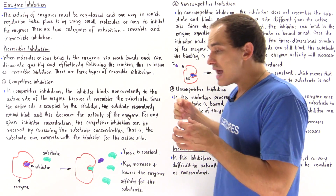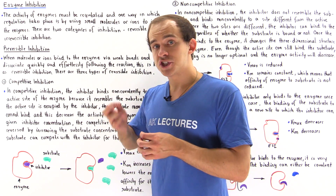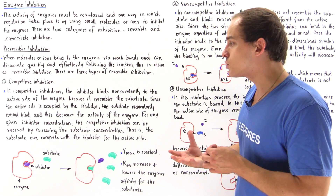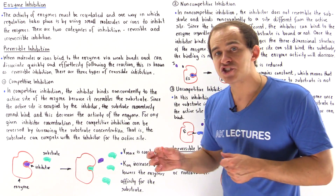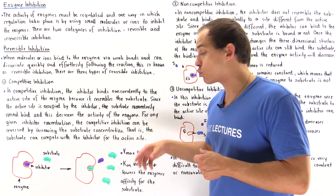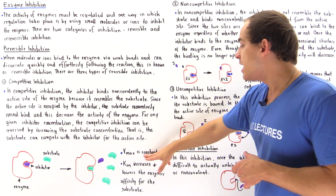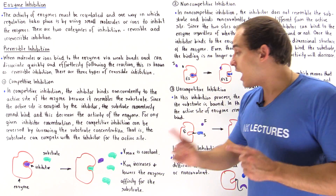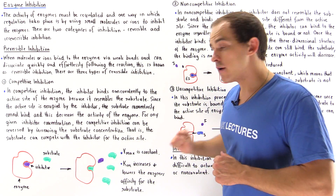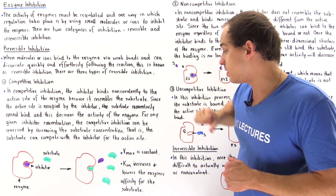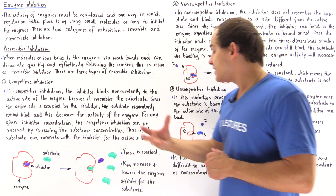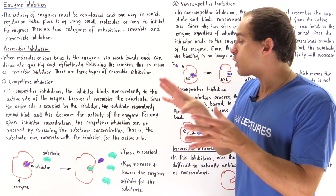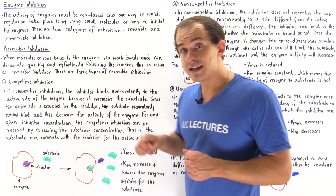If we increase the concentration of substrate high enough, eventually all the active sites will be occupied by substrate, and that means the overall maximum velocity, Vmax, or maximum rate of activity of the enzyme, does not actually change in competitive inhibition. However, because we have to increase the substrate concentration to reach that maximum velocity, the Km, the Michaelis constant, has to increase — meaning that the affinity of that enzyme for the substrate decreases.